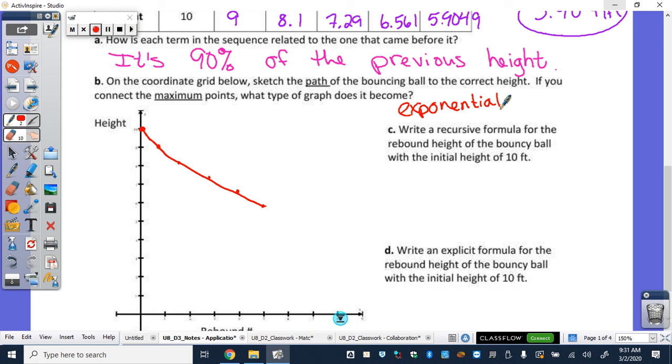So write a recursive formula for the rebound height of the bouncy ball with the initial height of 10 feet. Now this one's a little bit different. Word problems are always a little bit different. Instead of starting with an a sub 1 equals, where does this problem actually start? Zero. So we're going to actually start with an a sub 0 equals 10. And that's going to happen for your word problems because your word problems start at a time of 0. They don't start at the first term like all of the other ones have so far. So then as we're writing the other part, what's happening to each of the previous terms? Getting multiplied by what? 0.90. And then a sub n minus 1.